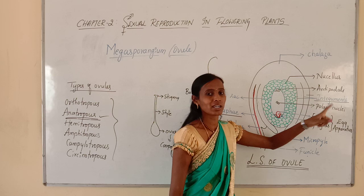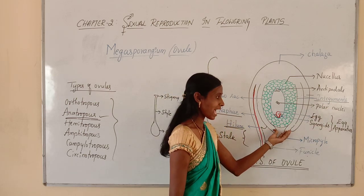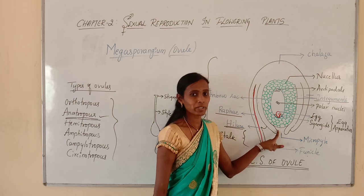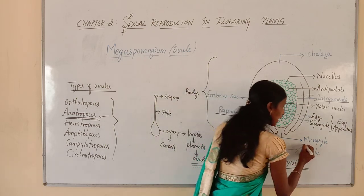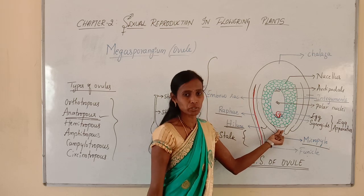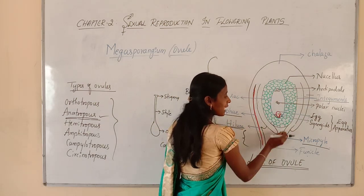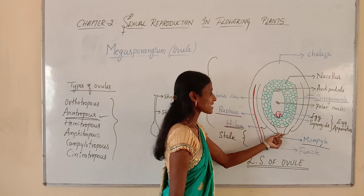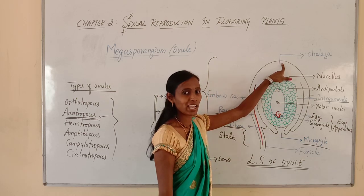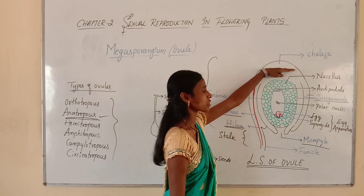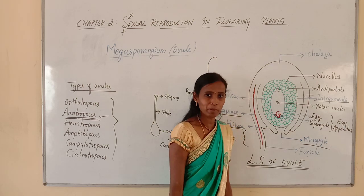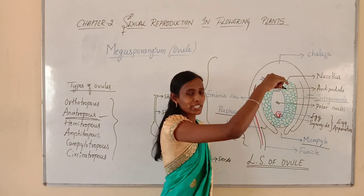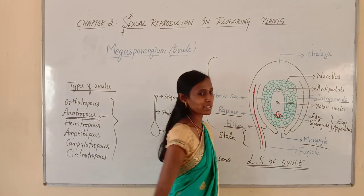Integuments are the protective layers surrounding the body of the ovule. The integuments cover completely all around the ovule except a small opening called Micropyle. Micropyle is the region where the integuments do not cover the ovule. The exact opposite region of the micropyle is called Chalaza, which represents the basal part of the ovule. The integuments usually arise from the chalaza. So this is the outer integument and this is the inner integument.